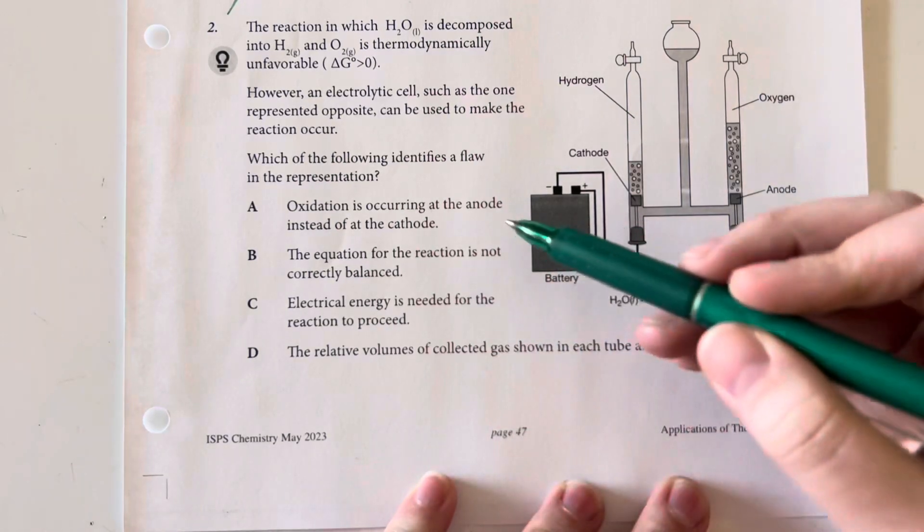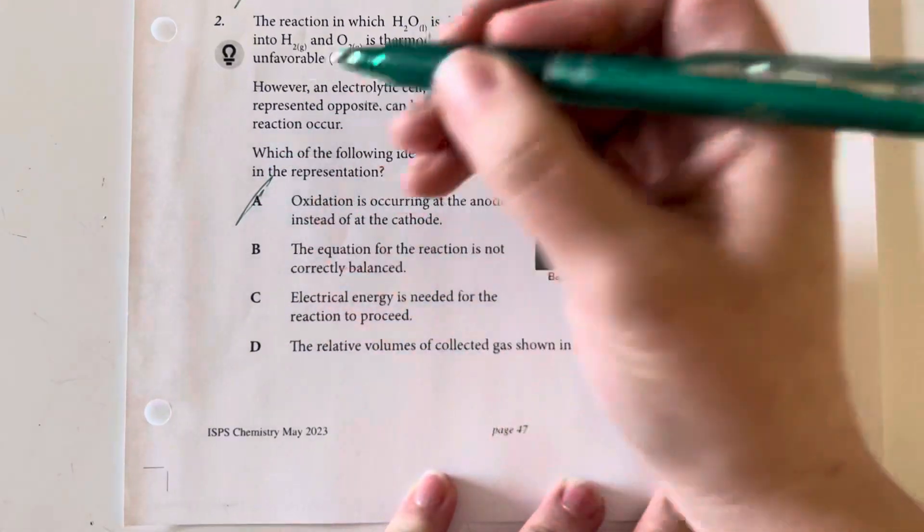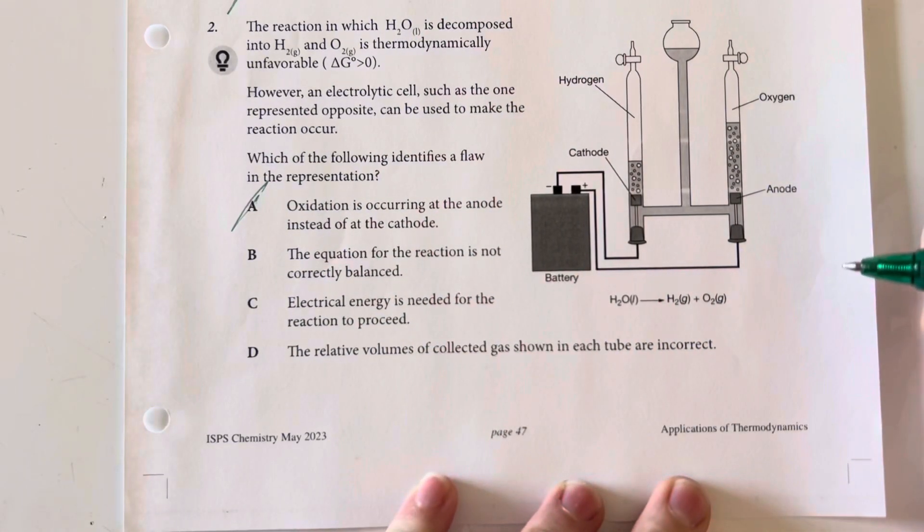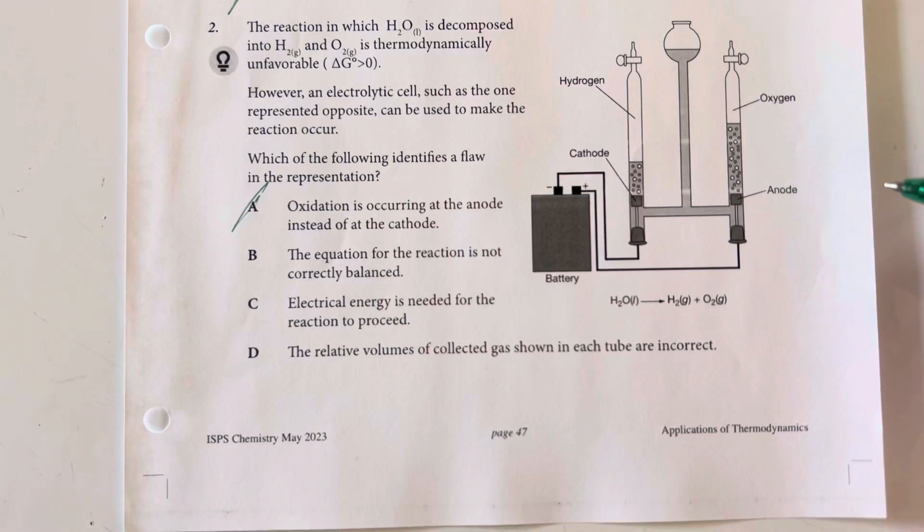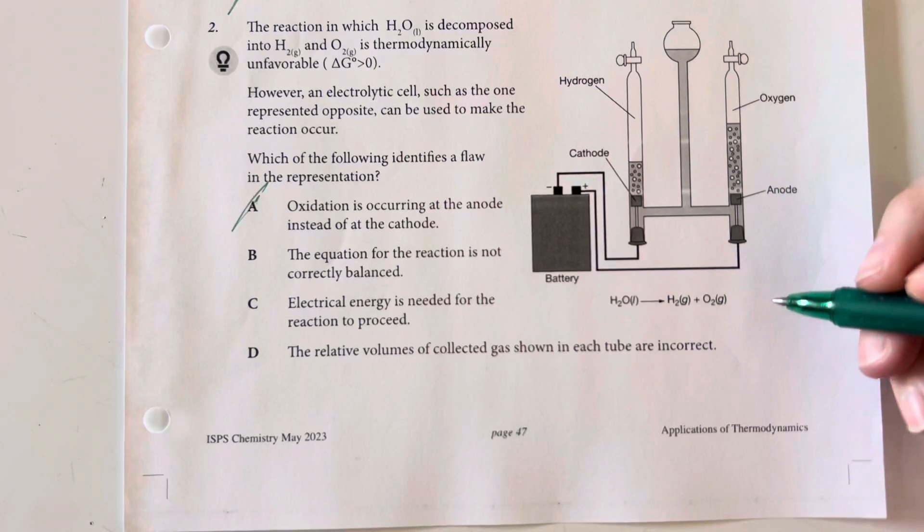The oxidation is occurring at the anode instead of the cathode. That's not correct. We are able to see that represented there. The equation for the reaction is not correctly balanced. That is a big problem there.